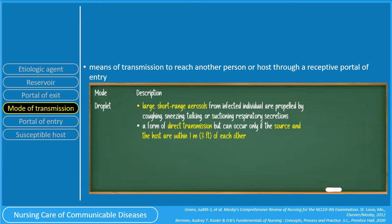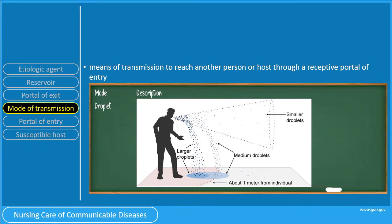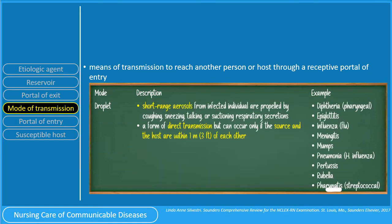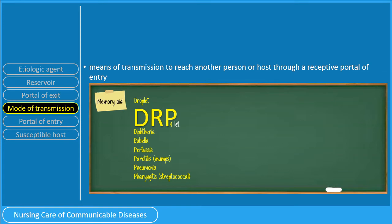Droplet transmission refers to large, short-range aerosols from infected individuals that are propelled by coughing, sneezing, talking, or suctioning respiratory secretions. It is a form of direct transmission but can occur only if the source and the host are within 1 meter or 3 feet of each other. Droplets are more than 5 micrometers. Examples include diphtheria, epiglottitis, influenza, meningitis, mumps, pneumonia, pertussis, rubella, and pharyngitis. A mnemonic is DROPLET: D for diphtheria, R for rubella, P for pertussis, pharyngitis or mumps, pneumonia, and pharyngitis.